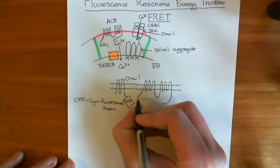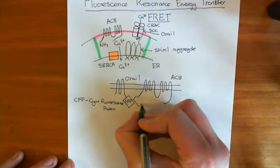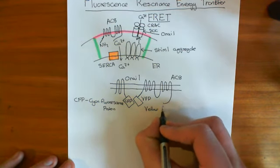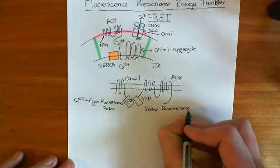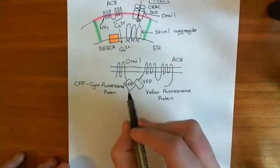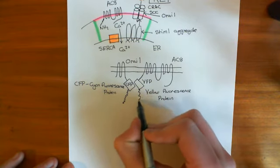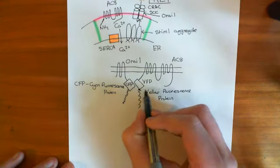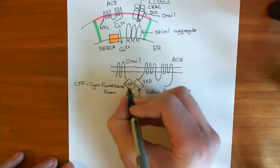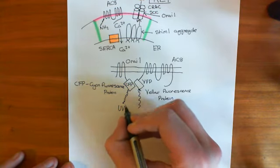Then you attach another fluorescent protein onto the amino terminus of this adenylyl cyclase 8 protein — a yellow fluorescent protein, YFP. Again, you can shine UV light at that yellow fluorescent protein and it will emit yellow light back. The important thing is that you shine a different frequency of UV to activate the cyan fluorescent protein than to activate the yellow fluorescent protein — you need different frequencies of UV.